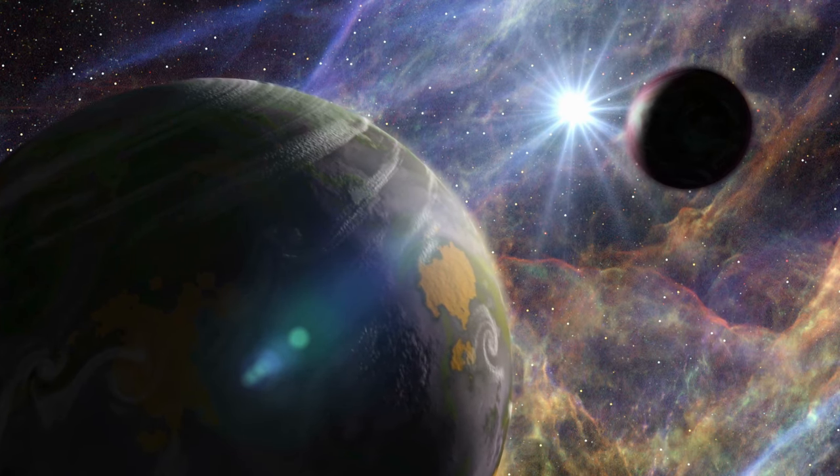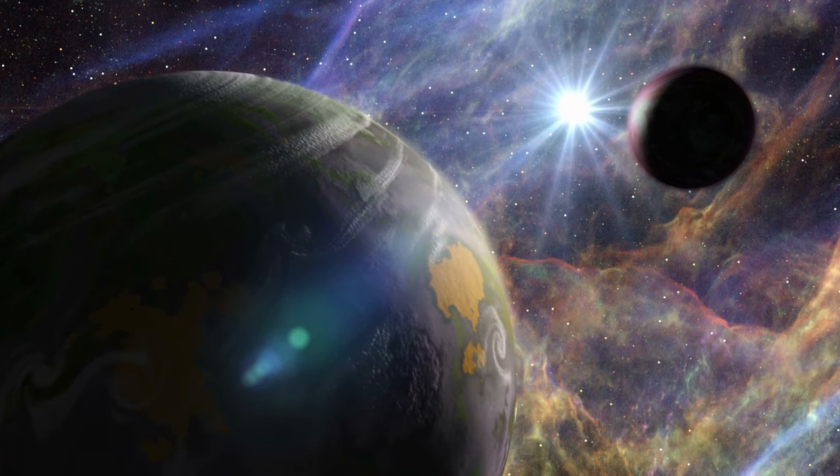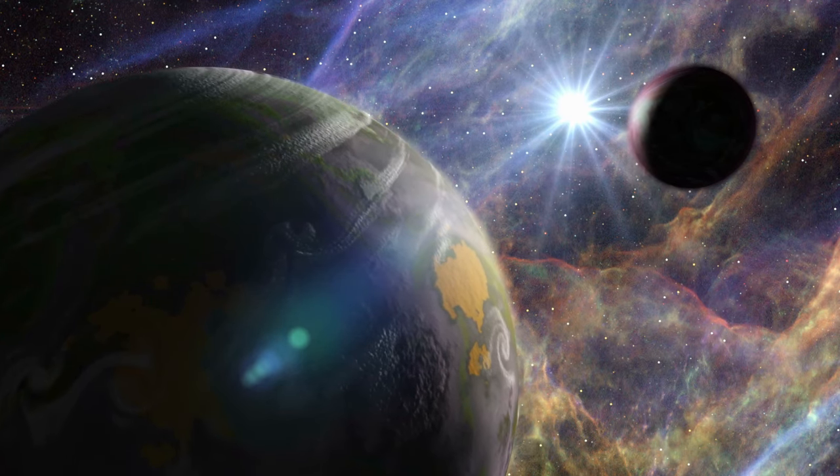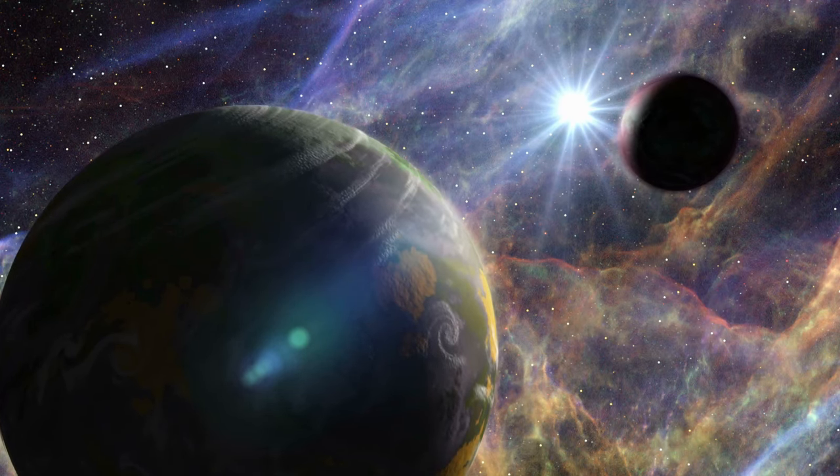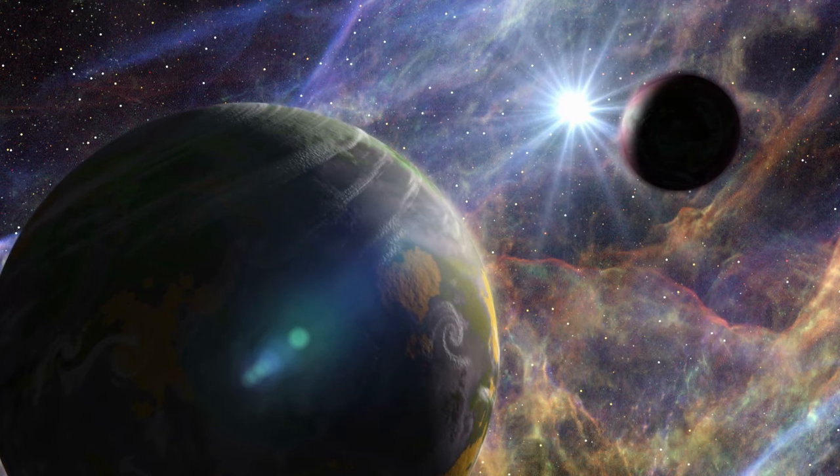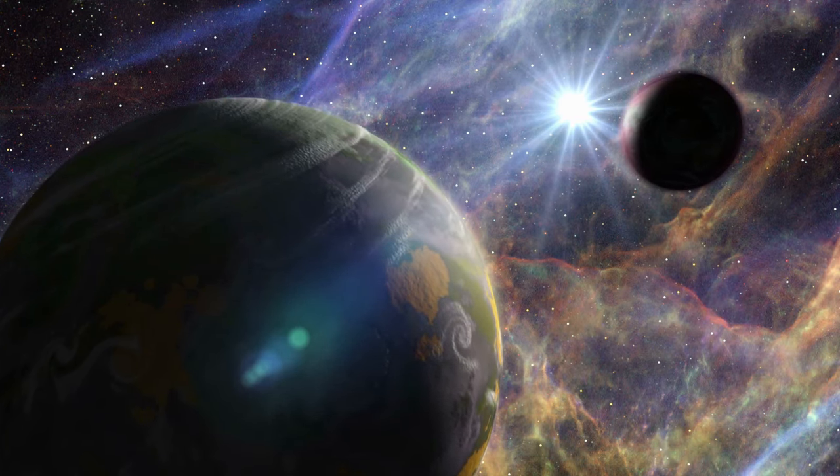The Great Red Spot, a stormy legacy on Jupiter. Jupiter, the largest planet in our solar system, hosts the Great Red Spot, a massive storm raging for over 350 years. This enduring tempest speaks to the dynamic and turbulent nature of Jupiter's atmosphere.